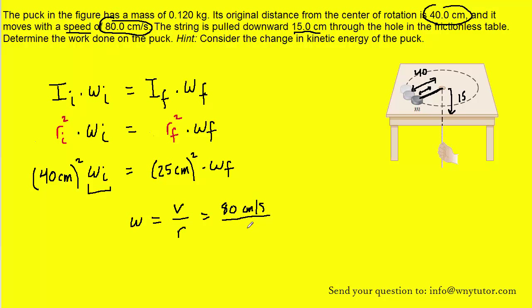And then again, the initial radius of the puck's path was given to us as 40 centimeters. So when we simplify this, we can see that we get 2. 80 divided by 40 is 2, and the unit for angular speed will be radians per second.